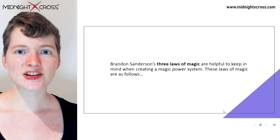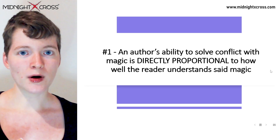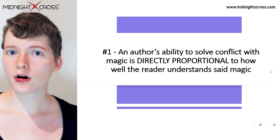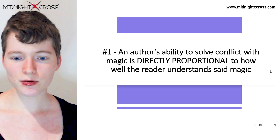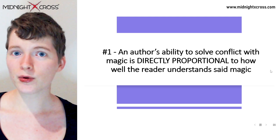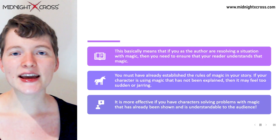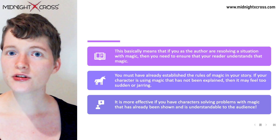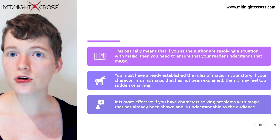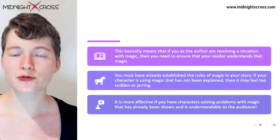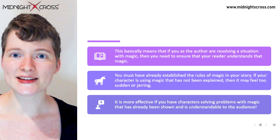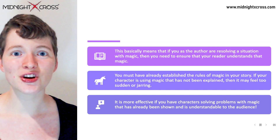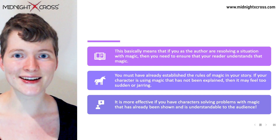These laws of magic are as follows. Number one: an author's ability to solve conflict with magic is directly proportional to how well the reader understands said magic. It is much more effective and exciting in a story to show your character resolving situations with magic that the audience also understands, and it makes them feel like they are going on that magical journey along with your characters.